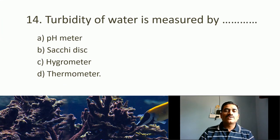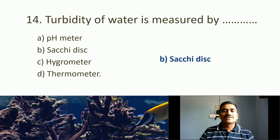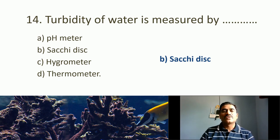Fourteenth MCQ: Turbidity of water is measured by which instrument? Options: pH meter, hygrometer, Secchi dish, thermometer. A pH meter is used for pH measurement. For measuring turbidity, we use a Secchi dish — a circular plate with black and white colored opposite corners — to measure the visibility. Turbidity is the opaqueness of the water, and Secchi dish is used to maintain water quality in culture systems.